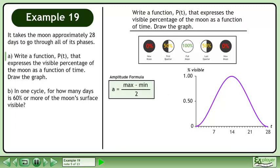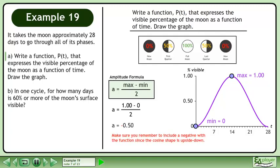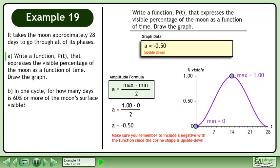We'll begin by finding the amplitude. The minimum of the graph is 0 and the maximum is 1. This gives us a equals negative 0.50. Make sure you remember to include a negative with the function since the cosine shape is upside down. Create a box to store the graph data.